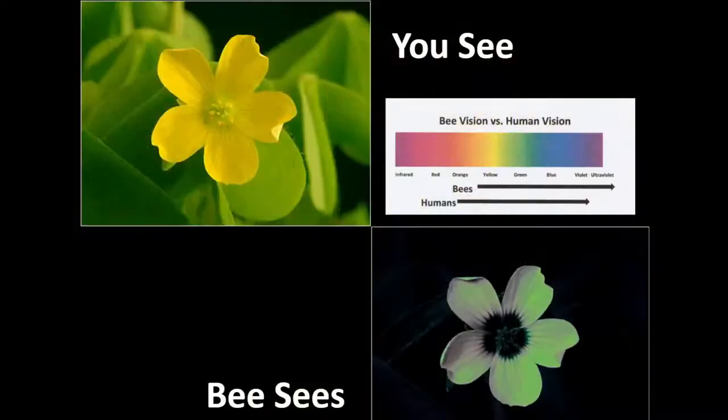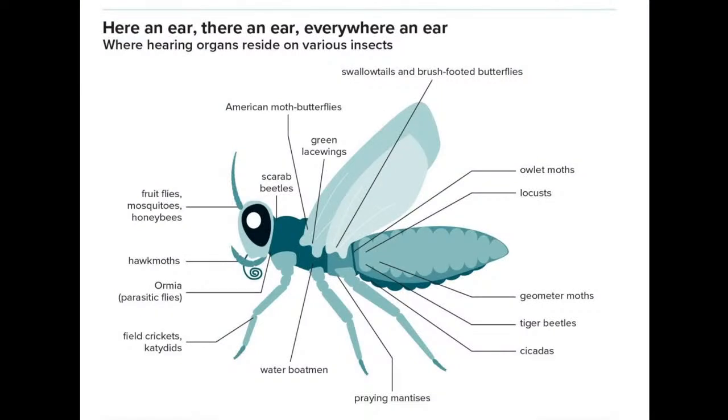The eyes are pretty interesting, but what about ears? Ears are really different. Some of them are a lot like ours — with eardrums that vibrate in response to sound — but others are completely different. One thing that's really interesting about insects is that ears can be anywhere on an insect: on the abdomen, on the thorax, on the head, on the antennae. In grasshoppers and katydids, the ears are in their knees — their front legs.